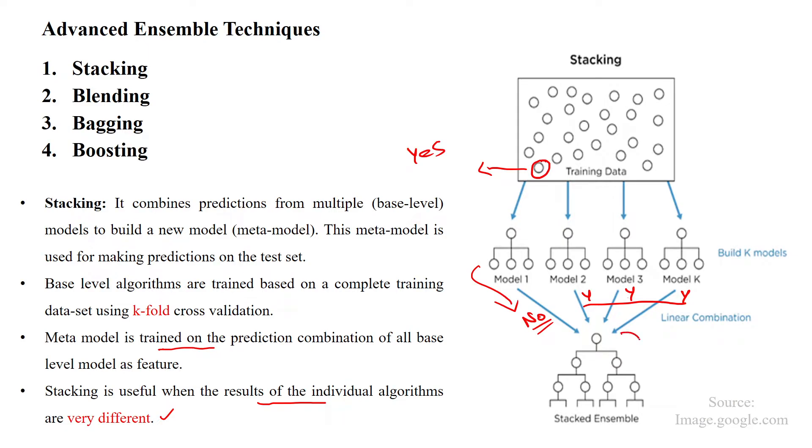Then this input, these are given to the input to the meta model, then which is useful to predict the output. So it may use again, average or weighted average or maximum voting to predict the output by using a stack ensemble method.